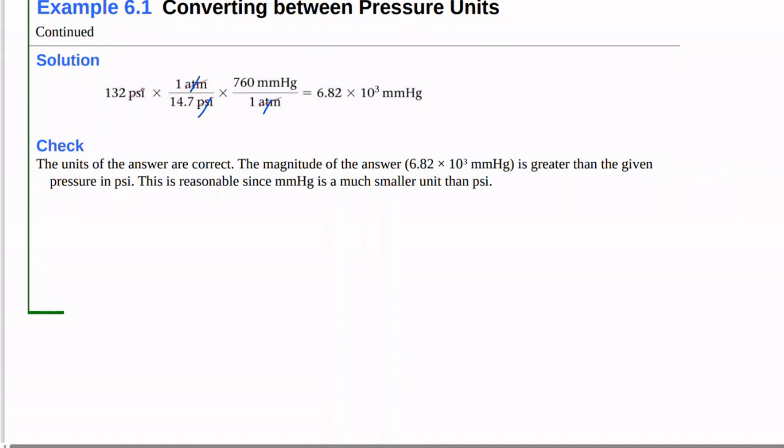PSI cancels, and we're left with millimeters of mercury. So we multiply 132 times 1 times 760 and divide by 14.7. And so our answer is 6.82 times 10 to the third millimeters of mercury.